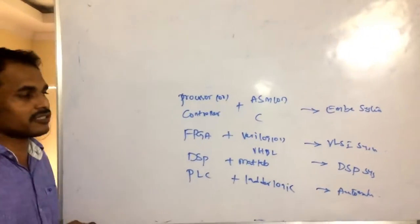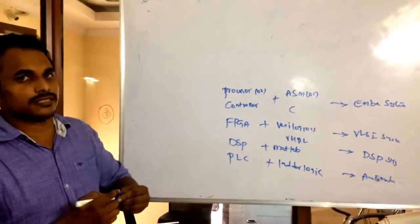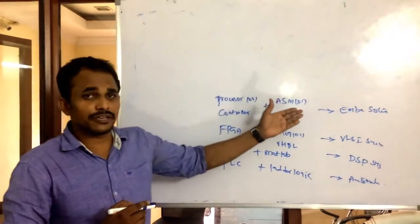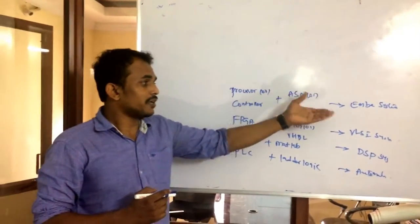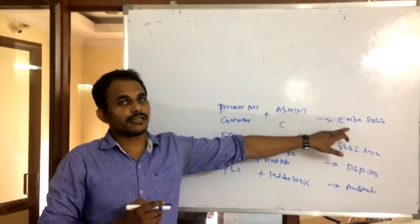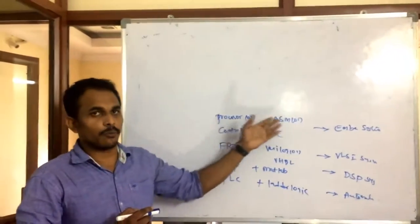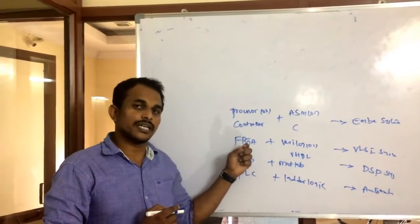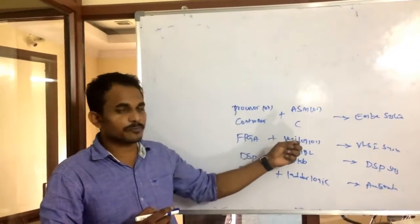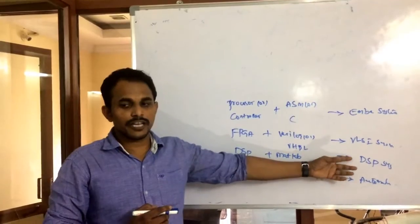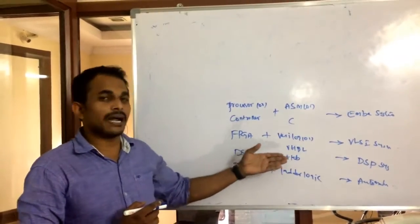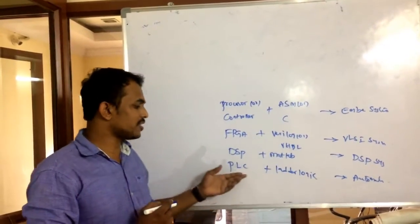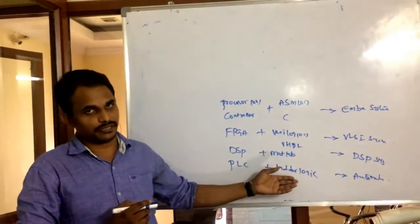So this is the combination required for any engineer towards device and language knowledge. You want to become a good embedded engineer? You have to update with this combination. You want to become a VLSI engineer? You have to update with this device and language. Coming to DSP system, you have to update with MATLAB and digital signal processor knowledge. Coming to automation side, you need this PLC and ladder logic combination.